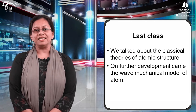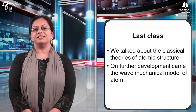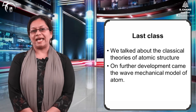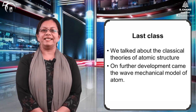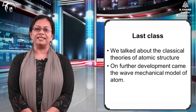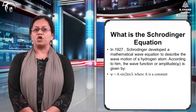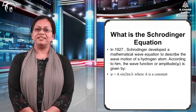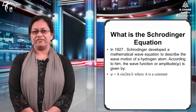After the establishment of the Heisenberg's uncertainty principle, the wave mechanical model came into being. When we knew that the electron can behave both as a particle and as a wave, scientist Schrödinger in 1927 developed a mathematical wave equation using the amplitude of the wave.